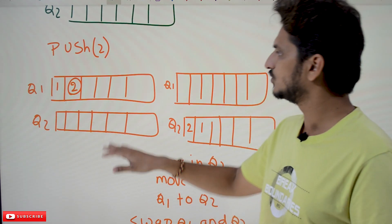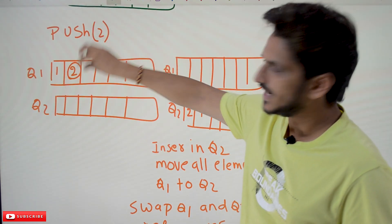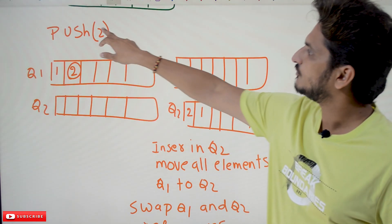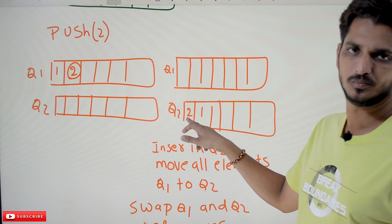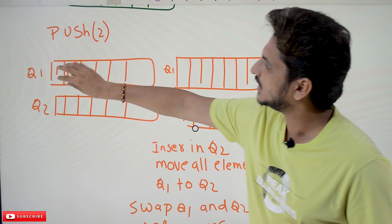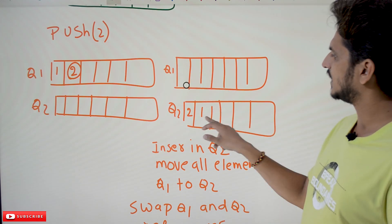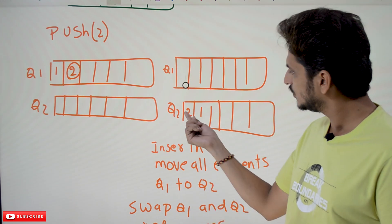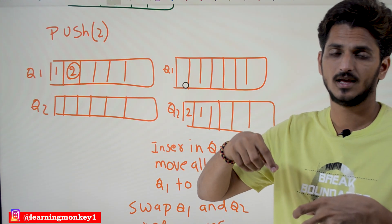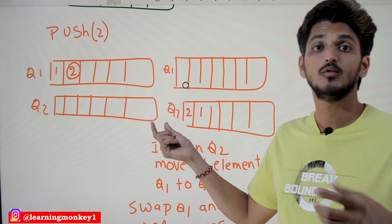In order to do that, the logic we follow is: whenever you want to insert any element — second, third, fourth, any element — first place that element onto queue two. Then take all the elements from queue one — only one in this case — and place it in queue two. Now the last inserted element is at the beginning of queue two. If you remove an element from queue two, two will be removed. Now it acts as a stack.